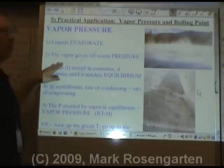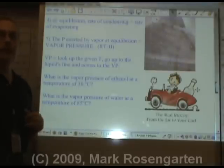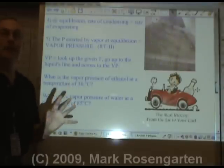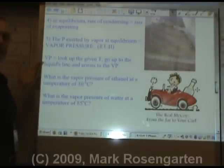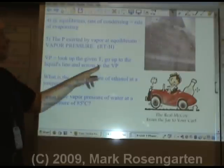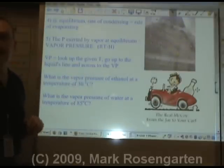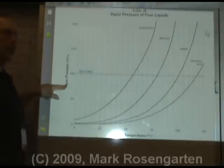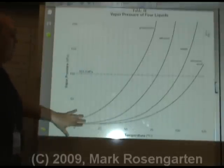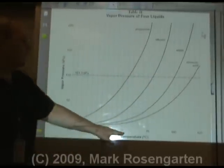Vapor pressure is the pressure exerted by a gas at vapor-liquid equilibrium. If you want to find out what that vapor pressure is, there's vapor pressure data for four liquids on reference table H. To find the vapor pressure, just look up the given temperature, go to the liquid's line, and shoot across to the vapor pressure.